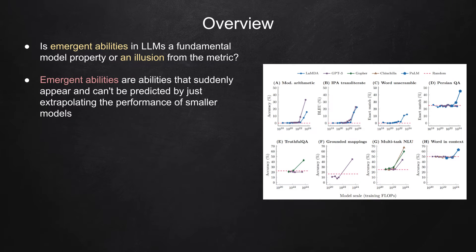As LLMs like GPT-3 have scaled up, they have been claimed to exhibit emergent abilities, which are abilities that suddenly appear and can't be predicted by just extrapolating the performance of smaller models. This idea has been a hot topic in AI research, as emergent abilities raise concerns about AI safety and alignment.